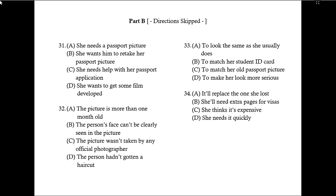Now read along as the directions for Part B are being read. Part B. Directions. In this part of the test, you will hear longer conversations. After each conversation, you will hear several questions. The conversations and questions will not be repeated. After you hear a question, read the four possible answers in your test book and choose the best answer. Then, on your answer sheet, find the number of the question and fill in the space that corresponds to the letter of the answer you have chosen. Remember, you are not allowed to take notes or write in your test book. Go on to the next page.